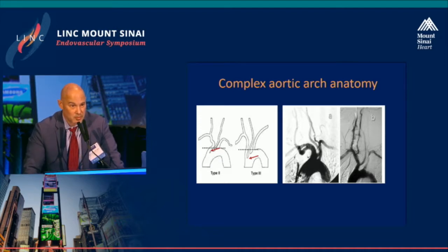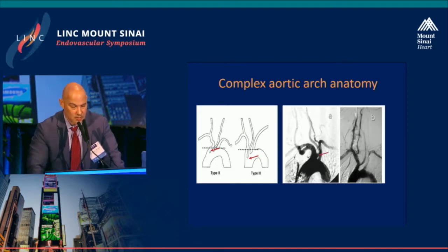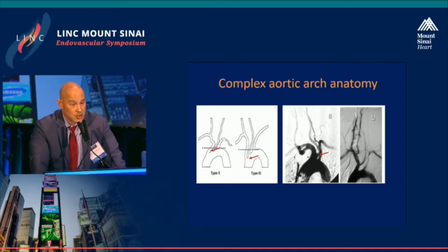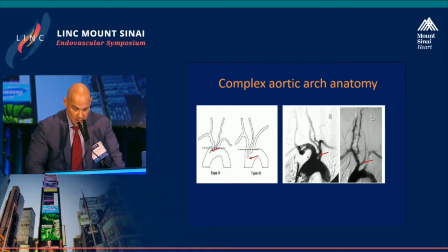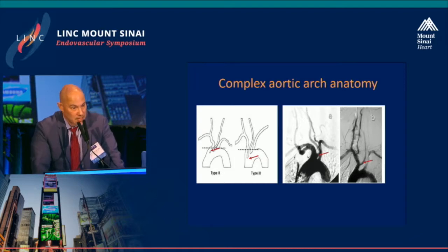So it's very difficult to maneuver catheters up into the carotids. The other form of complex aortic arch is what we call a bovine arch, and it comes in two varieties: one where the left carotid originates from a common origin with the brachiocephalic or innominate artery, and the other where it is a branch of the innominate artery.